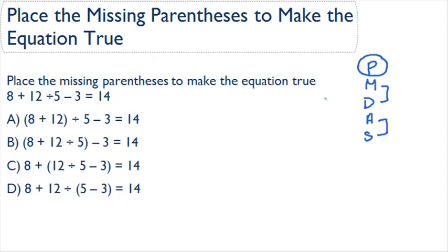Let's go through each equation and see whether the placement of the parentheses makes our equation true or not. Here we have 8 plus 12 in parentheses, so we're going to do that first. 8 plus 12 is 20. If we divide 20 by 5, we're going to get 4, and if we subtract 3 from it, we're going to end up with 1. That means that A is not our correct solution, because 1 is not the same as 14.